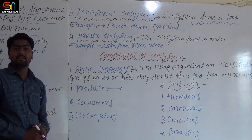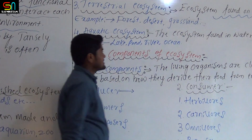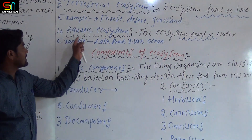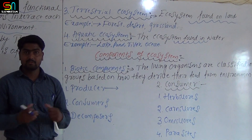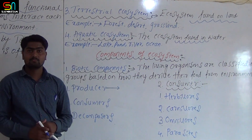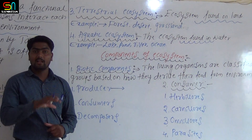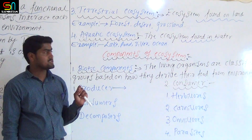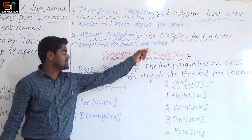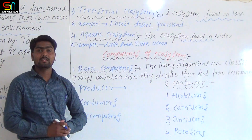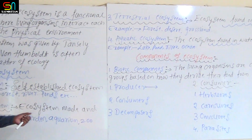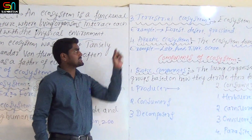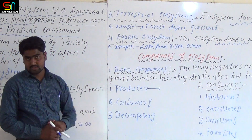Fourth type: aquatic ecosystem — an ecosystem found in water. So to recap, there are four types: natural ecosystem, artificial ecosystem, terrestrial ecosystem, and aquatic ecosystem.